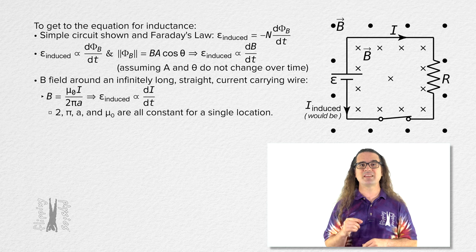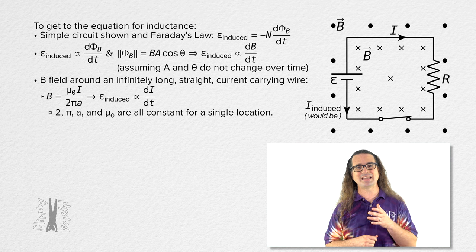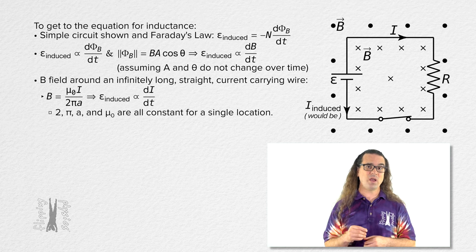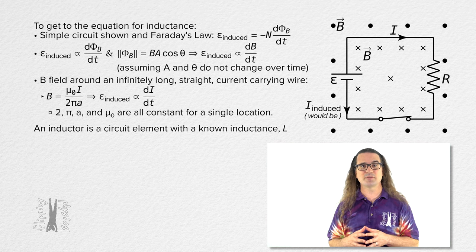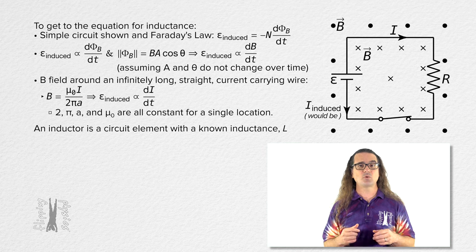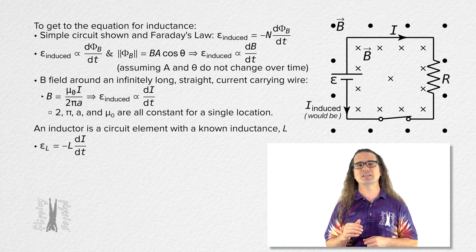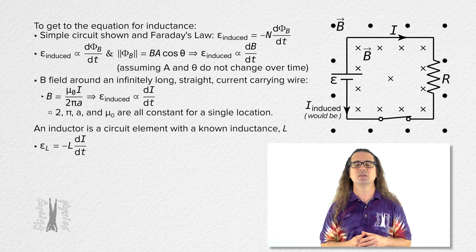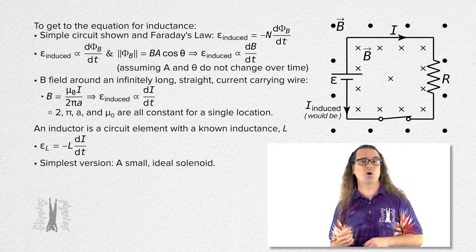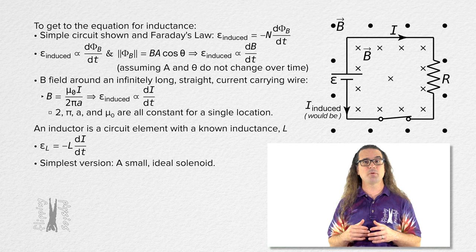I've been able to show that inductance, in general, is proportional to the time rate of change of current in a conductor. This brings us to the equation for the inductance of an inductor. An inductor is a circuit element with a known inductance. The equation for the inductance of an inductor is: the induced EMF of an inductor equals the negative of the inductance of the inductor, capital L, times the derivative of current with respect to time. The simplest version of an inductor is a small ideal solenoid.